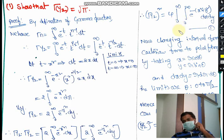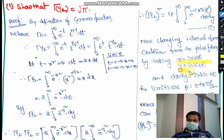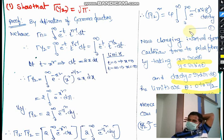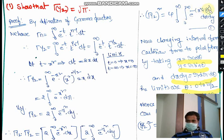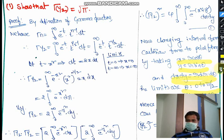To simplify this double integral, we change from Cartesian to polar form using x = r cosθ, y = r sinθ, and dx dy = r dr dθ. The limits become θ: 0 to π/2 and r: 0 to ∞. Since x² + y² = r²(cos²θ + sin²θ) = r², the integral becomes [Γ(1/2)]² = 4 ∫₀^(π/2) ∫₀^∞ e^(−r²) · r dr dθ.